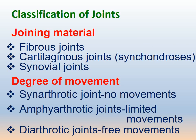Classification of joints: we can classify joints on two bases — firstly, based on the joining material, or based on the degree of movement. Based on joining material, joints are classified as fibrous joints, cartilaginous joints, and synovial joints. Based on degree of movement, synarthroses permit no movement, amphiarthroses permit limited movement, and diarthroses permit free movement.